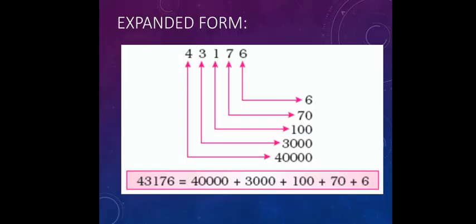Next, we are going to see about expanded form. By using the place value, we are expanding a number. The standard form of the number is 43,176. By expanding, we get it as 4 ten-thousands plus 3000 plus 100 plus 7 tens plus 6 ones.